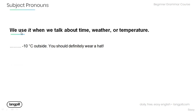Remember that we can also use 'it' when we talk about time, weather, or temperature. Have a look at the following sentence and fill in the blank using the proper subject pronoun: 'Minus ten degrees Celsius outside — you should definitely wear a hat.' Answer: 'It's minus ten degrees Celsius.'